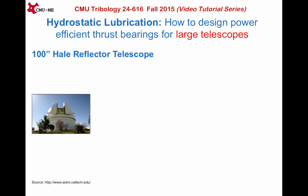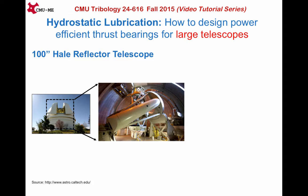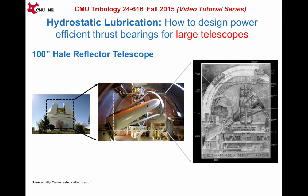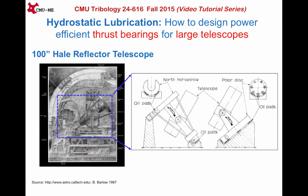Let's have a closer look at the Hale telescope, which pioneered the use of hydrostatic thrust bearings for telescopes in the 1940s. This is the structure which hosts the telescope. Let's zoom inside the structure to see the actual telescope. Now let's check out the model form of the scope. If we were to draw a schematic of the Hale telescope, then it would look something like this. We can now see the actual positions of the hydrostatic thrust bearings denoted by oil pads in the schematic.